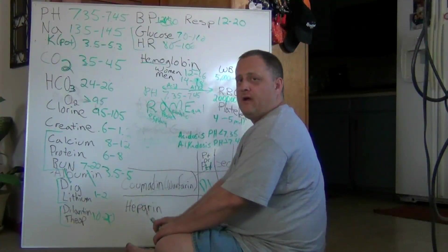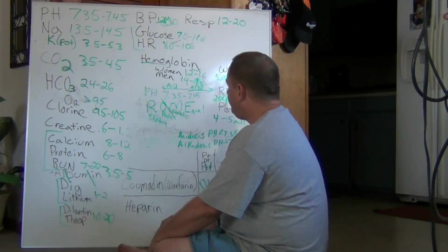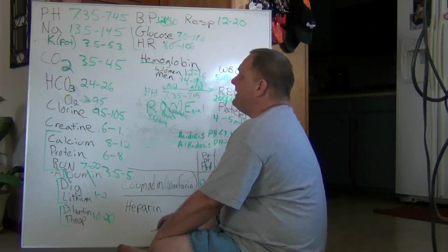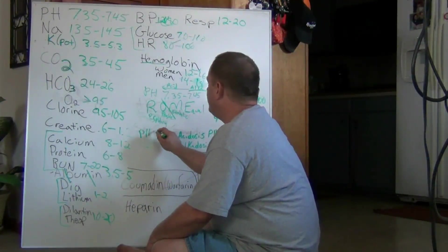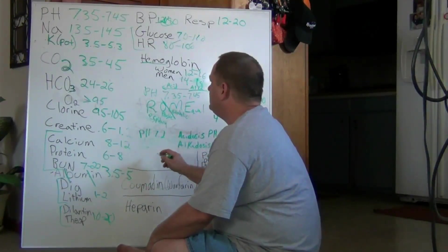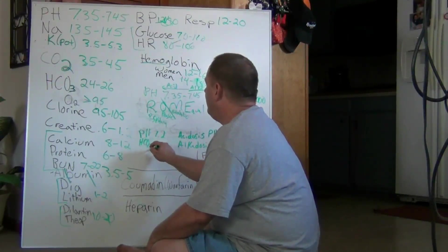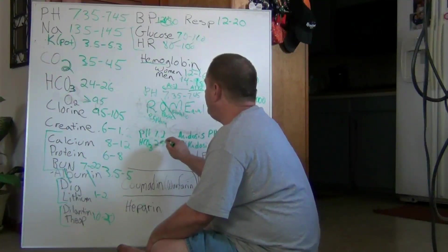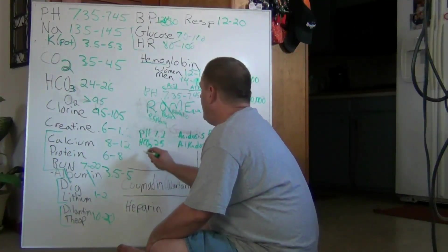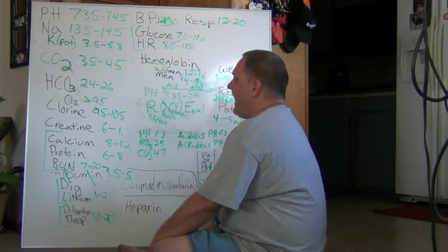Now, how do we determine whether it's respiratory or metabolic? Well, we're going to have a set of lab values, and say we have a pH of 7.2, and an HCO3 value of 25, and a carbon dioxide value of 47.